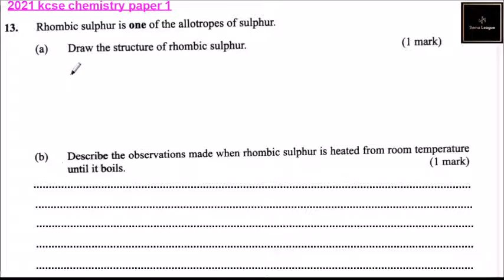The rhombic structure, you can draw it like this. Put a mark there. This is octahedral. We have another sulfur there, another sulfur there, another one there.